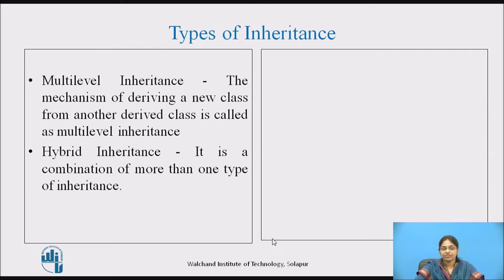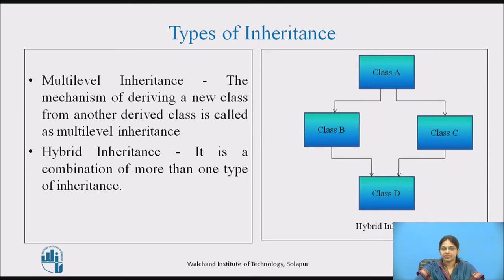The last type is hybrid inheritance, a combination of more than one type of inheritance. The four basic types are single, multiple, hierarchical, and multilevel. Hybrid inheritance combines these basic types; the structure is not fixed as the combination can vary. In one example, the upper part gives hierarchical inheritance and the bottom part gives multiple inheritance.